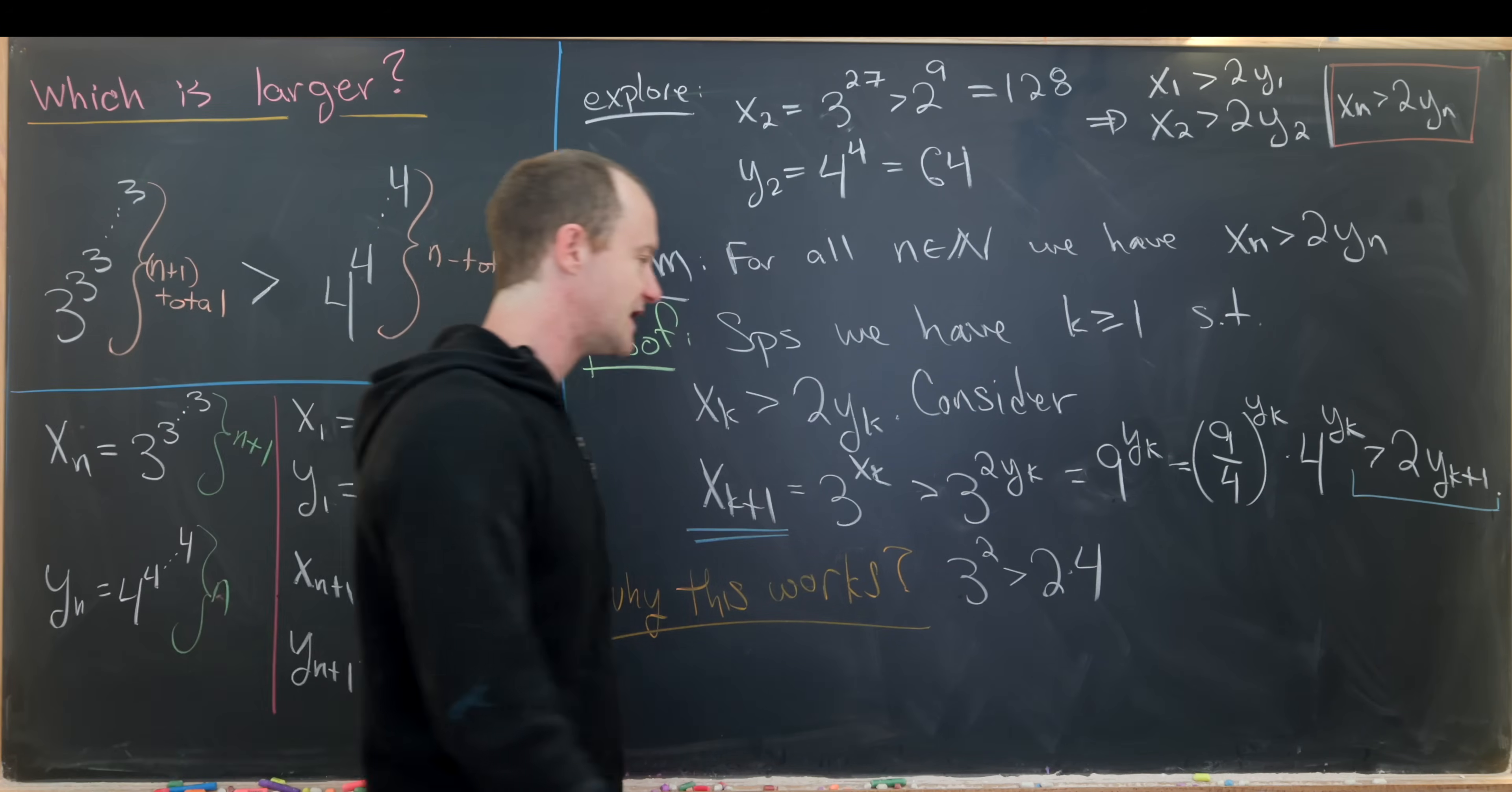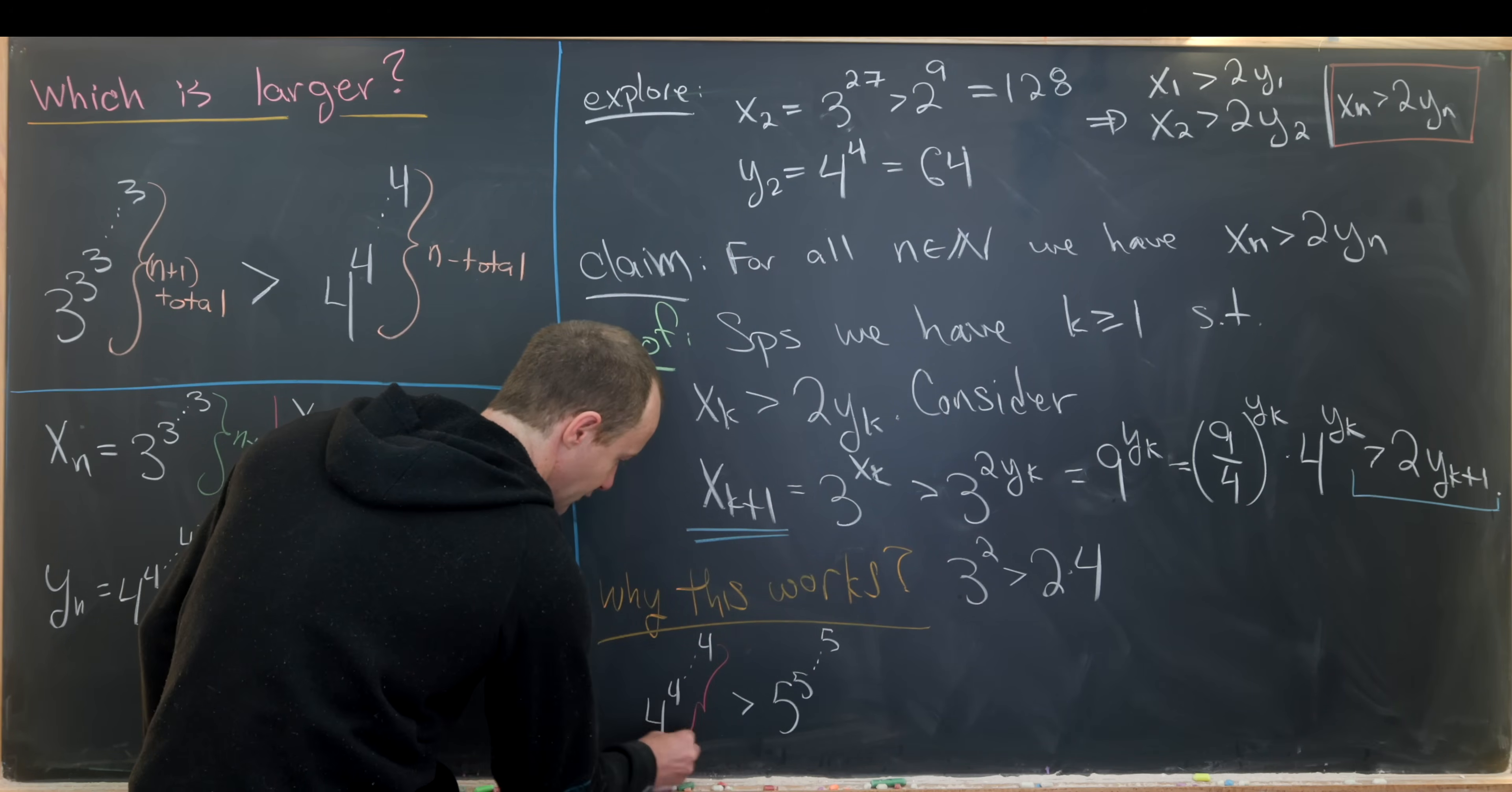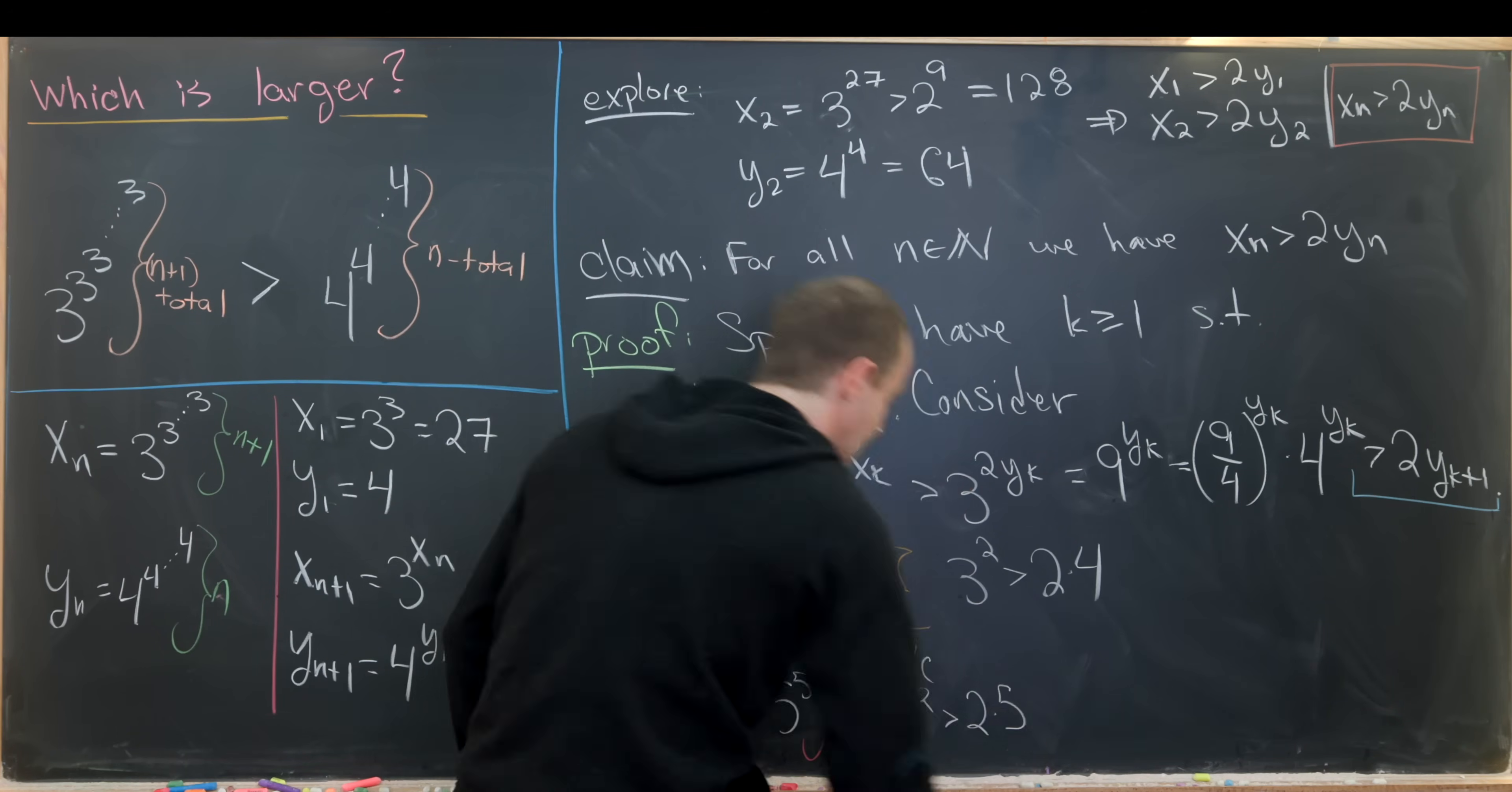So that means we can apply this to other problems like, for example, 4 to the 4 all the way up will be bigger than 5 to the 5 all the way up. And this is where we have n plus 1 here and n here. And this is going to follow pretty much the same way, and this follows because 4 squared is bigger than 2 times 5.